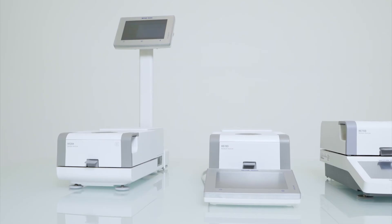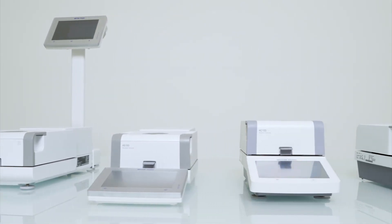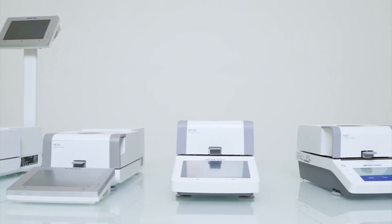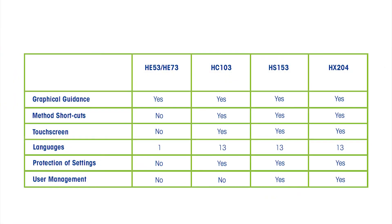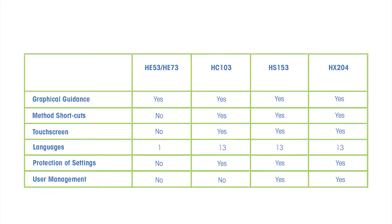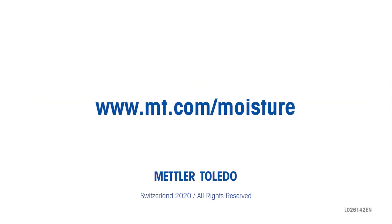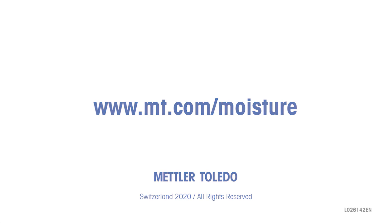With the answers to these questions, you can check which models include the different features you need. Mettler Toledo instruments with touchscreen offer workflow guidance, shortcuts, and protection against setting changes, making them very simple to use. The HS153 and HX204 offer user management, further ensuring that everything is done and documented correctly, making it the perfect solution for regulated environments. If you want to know more, check out our video playlists and feel free to contact us.